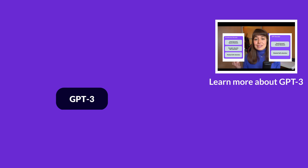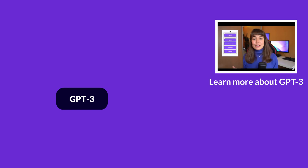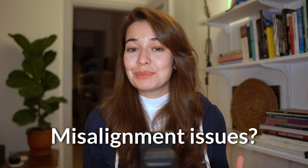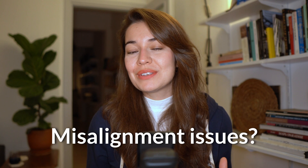ChatGPT is based on the GPT-3 model, but has been further trained using human feedback to guide the learning process with the specific goal of mitigating the model's misalignment issues. Language models like GPT-3 are really capable, but one of the problems is that they cannot really align super well with human expectations.